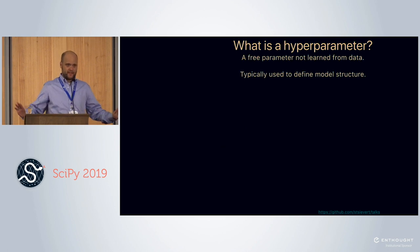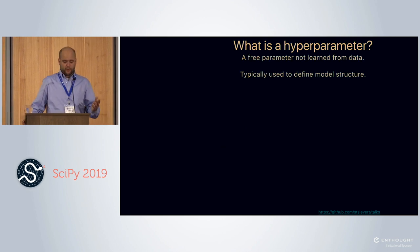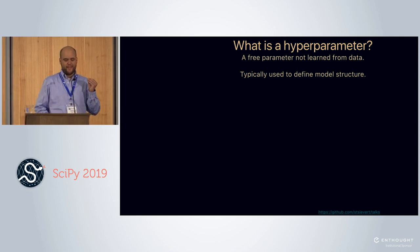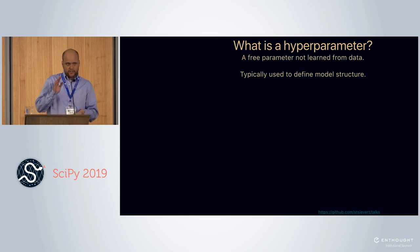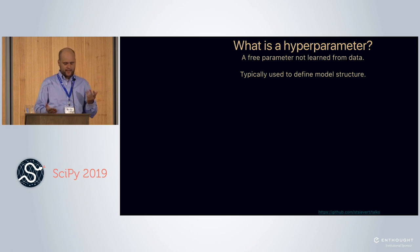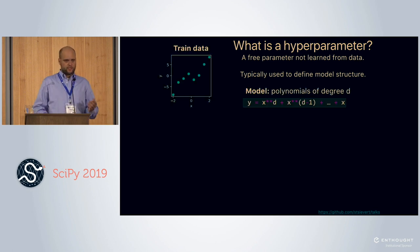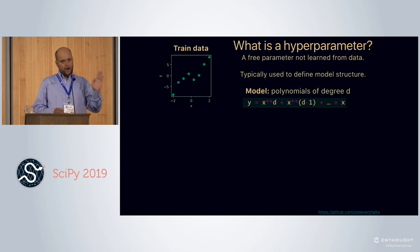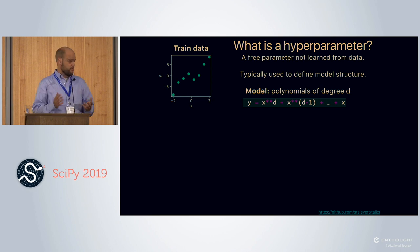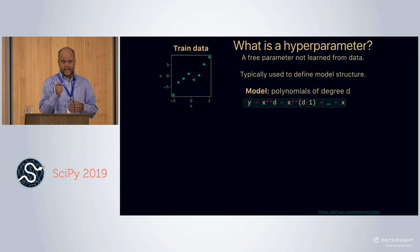Let's start with the basics: what is a hyperparameter? A hyperparameter is a free parameter that is not learned from data. Typically these influence model architecture in some way — like the depth of your neural network or the depth of your decision tree. For example, let's say we have eight training points and we say the output is related to the input via some polynomial of degree D. The degree D is the hyperparameter.